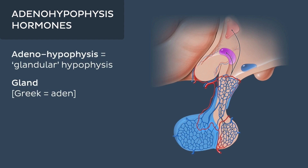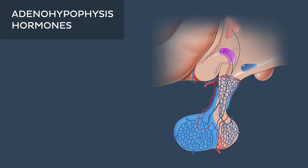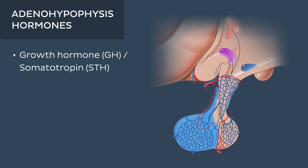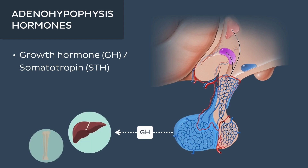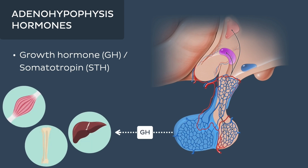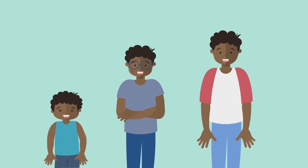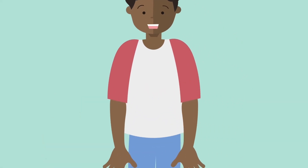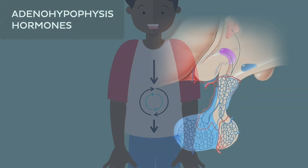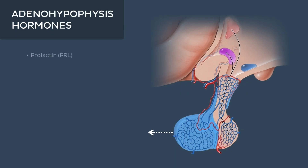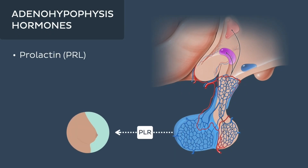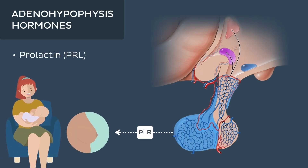Taking a look at the hormones of the adenohypophysis: first up we have growth hormone, or somatotropin, and its target is tissues like your liver, bones and muscles, which are in turn induced to release growth factors that stimulate growth and increase metabolic rate. Next we have prolactin, which targets the mammary glands and promotes the production of breast milk.